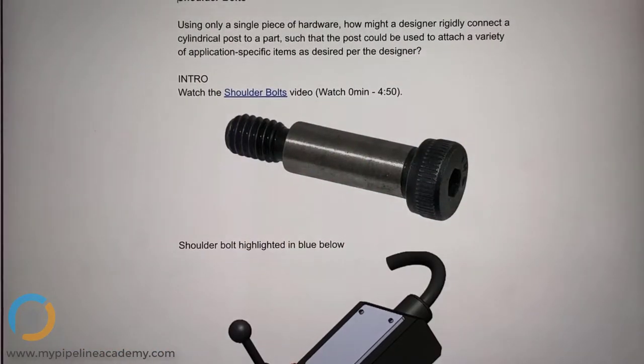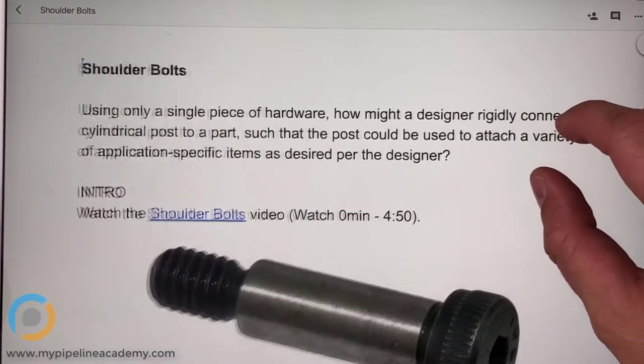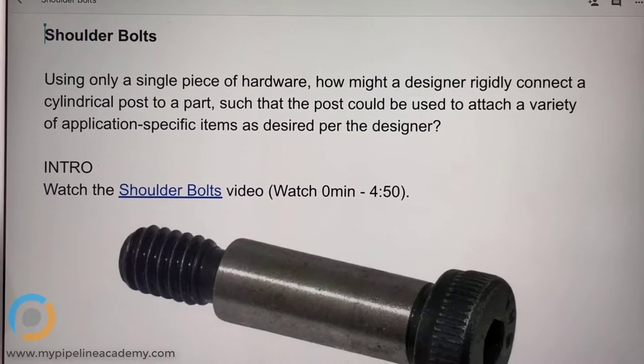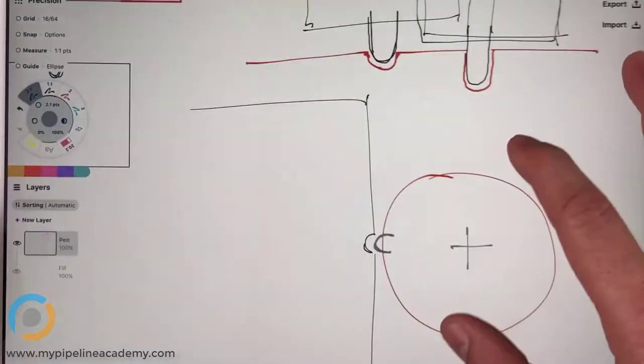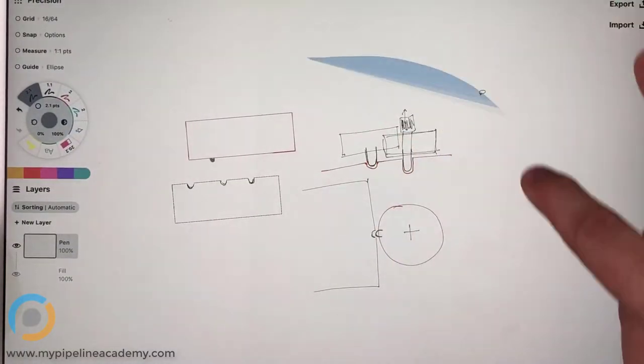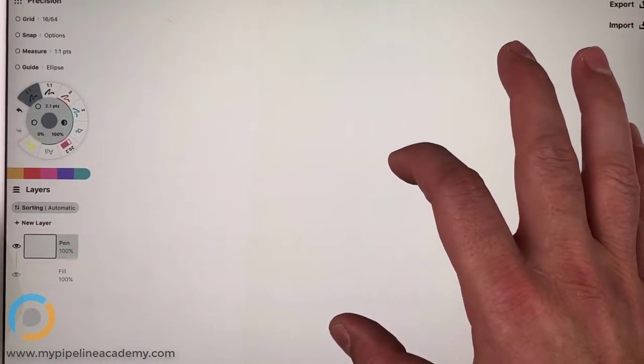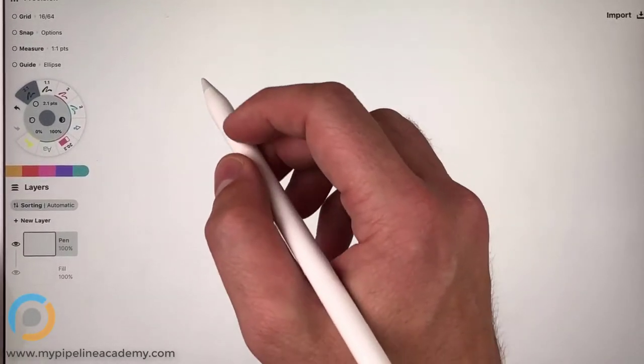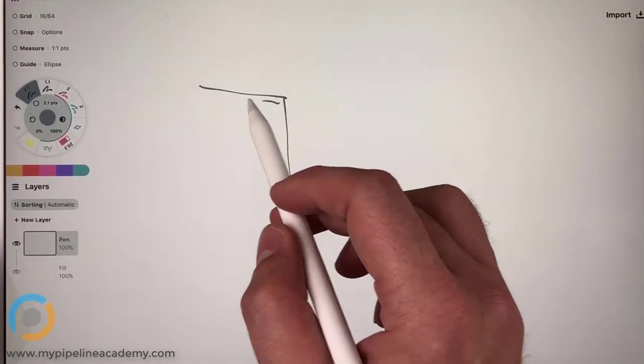Let's talk a little bit about this intro here and make sure it makes sense. Using only a single piece of hardware, how might a designer rigidly connect a cylindrical post to a part such that the post could be used to yada yada yada. So we're going to sketch something out here. Let's say that you have a wall, a block, whatever that is over here.